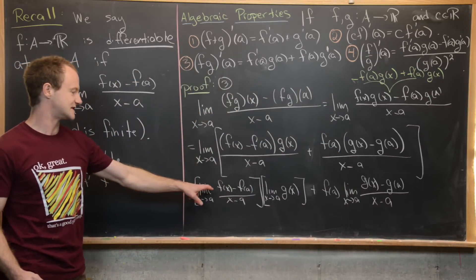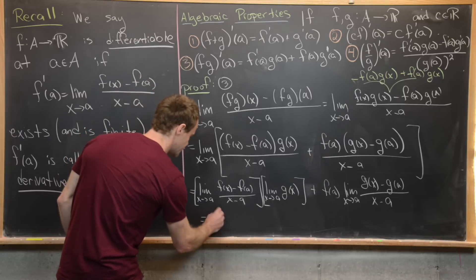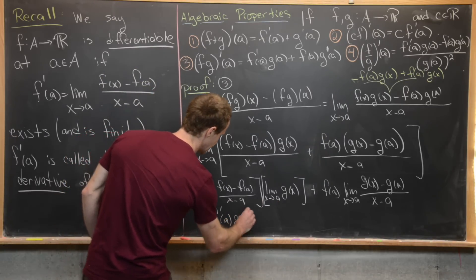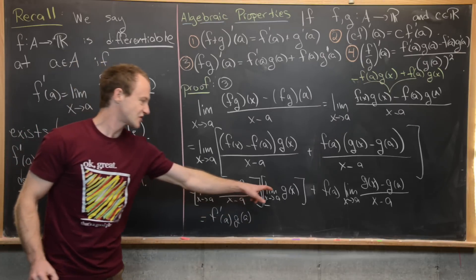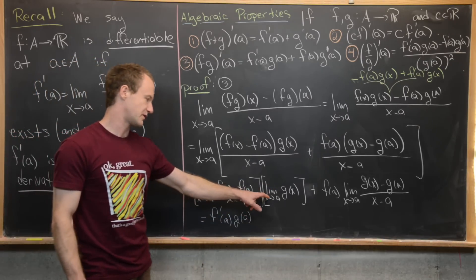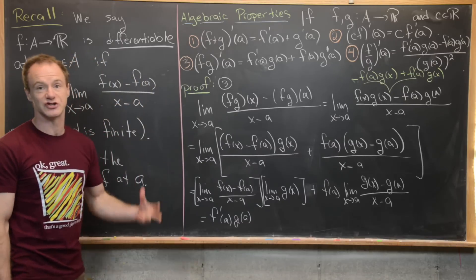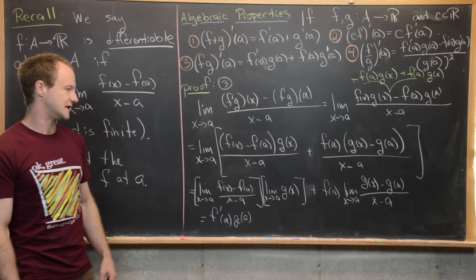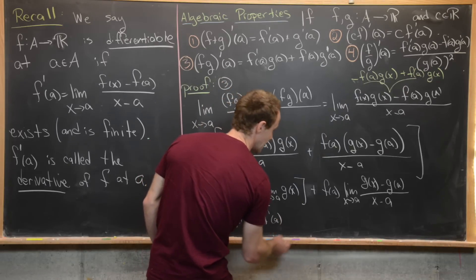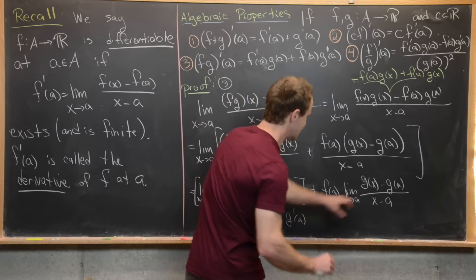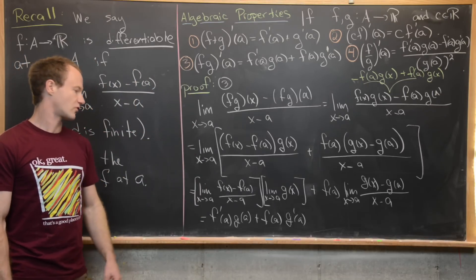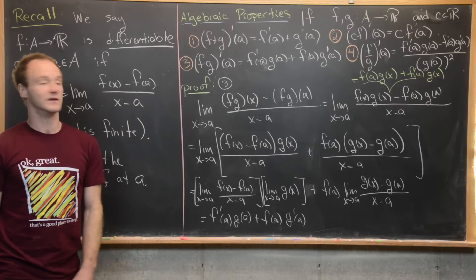The first limit is just the derivative f'(a). The second limit, the limit as x→a of g(x), equals g(a) by the fact that differentiability implies continuity — which we proved in the last video. Then we have plus f(a) times the limit as x→a of [g(x) minus g(a)]/(x minus a), which is g'(a). So we've achieved the product rule: (f·g)'(a) = f'(a)·g(a) + f(a)·g'(a).